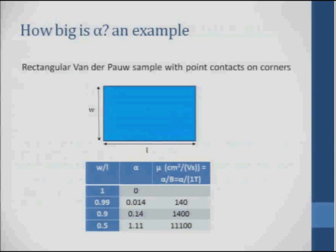So the question is, how big can alpha be? If I had a perfectly rectangular Van der Pauw sample with point contacts on the current, on the edges, alpha would be zero. There would be no voltage by symmetry. So alpha is a measure of how much your sample deviates from perfect symmetry. And the case where I analyzed here is just a case where instead of having perfect square, I have a sample that's slightly rectangular, so L and W aren't equal. If W and L are equal, alpha is equal to zero. If it's just 1 percent different, then alpha is equal to 0.014. And if it's 10 percent difference, it's 0.14. And if it's 50 percent difference, if it's a long, thin rectangle, then it's 1.11. Alpha can get quite big.